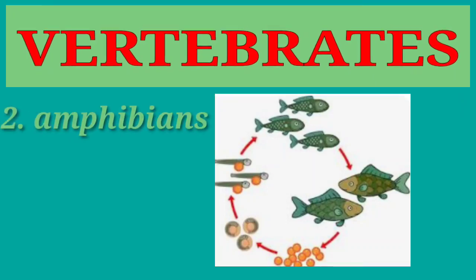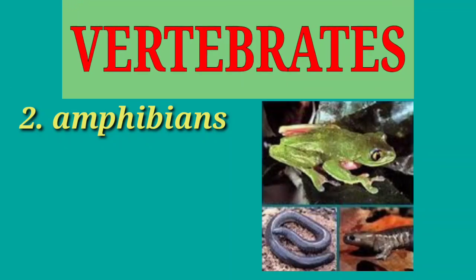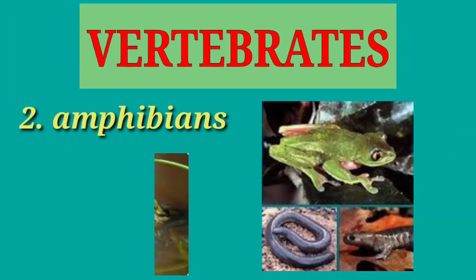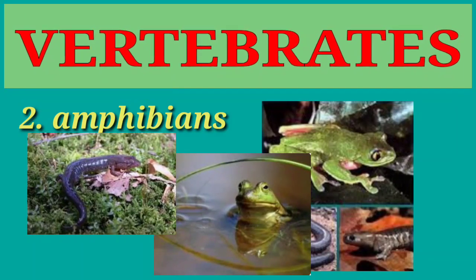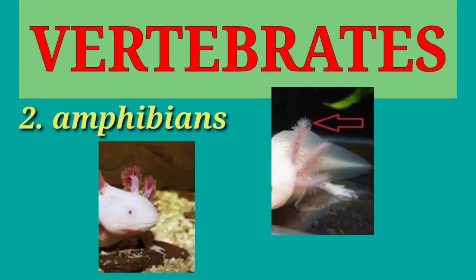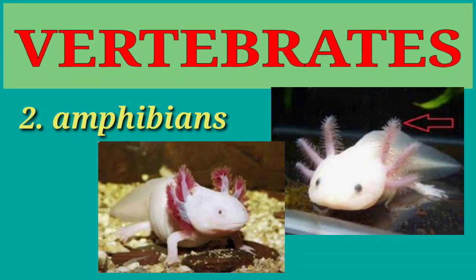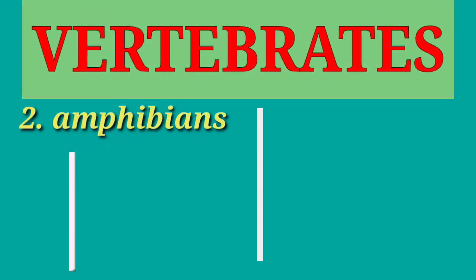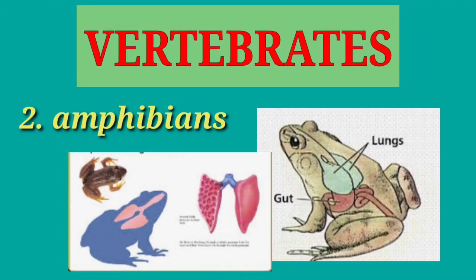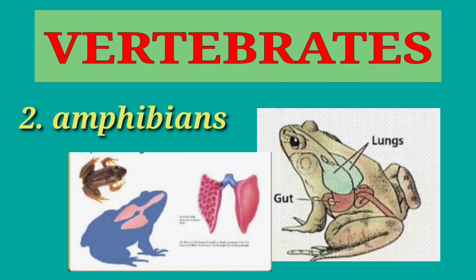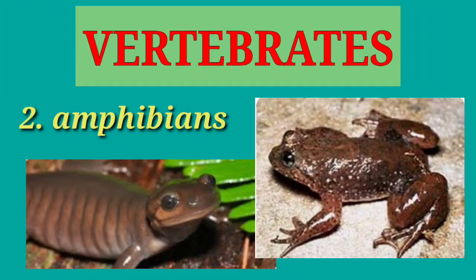Next are the amphibians. Amphibians are animals that spend part of their life in water and part on land. As water dwellers, they have gills for breathing. When they grow, the gills are replaced by a pair of lungs. When adults live on land, they breathe through their lungs. They have moist skin that allows exchange of gases.